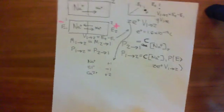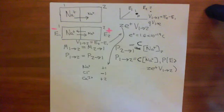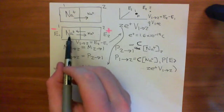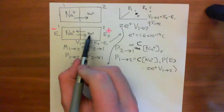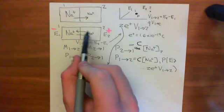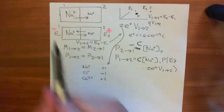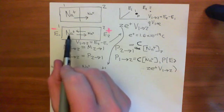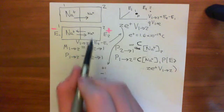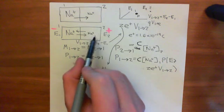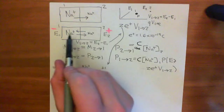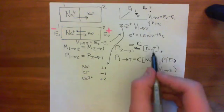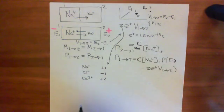At equilibrium — at the equilibrium potential — what's going to be true is that the number of sodium ions moving this way is going to equal the number of sodium ions moving this way. That is, the probability that a sodium ion will move from compartment 1 to compartment 2 should equal the probability that a sodium ion is going to move from compartment 2 to compartment 1. So these two things should be equal.